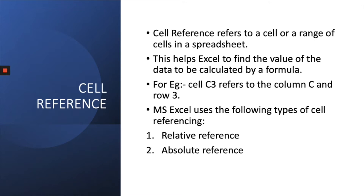For example, cell C3 refers to column C and row 3. MS Excel uses two types of cell referencing: relative reference and absolute reference.